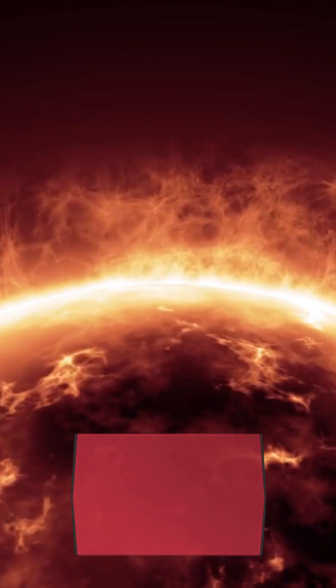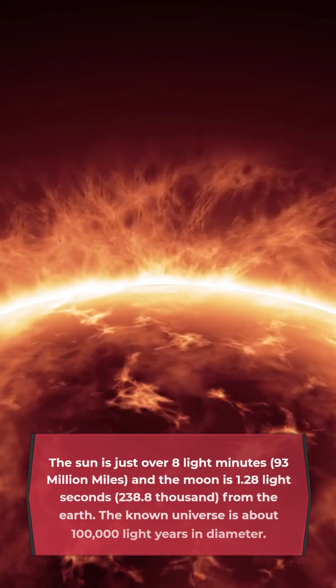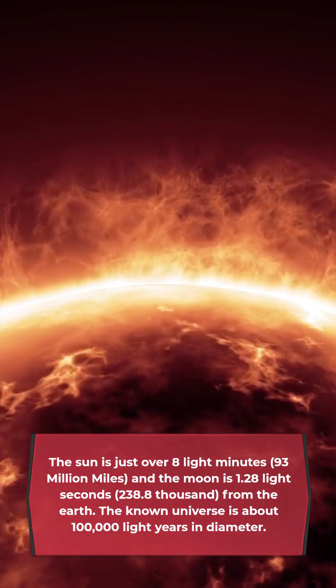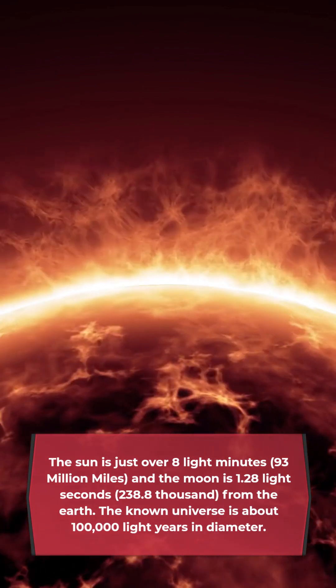The sun is just over 8 light minutes, 93 million miles, and the moon is 1.28 light seconds, 238.8 thousand, from the Earth.